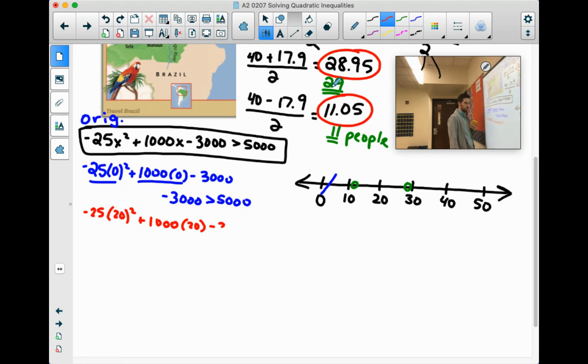Negative 25 times 20 squared plus 1,000 times 20 minus 3,000 greater than 5,000. It'll show up there eventually. Hopefully. Let's see.